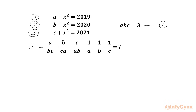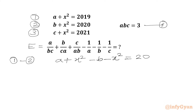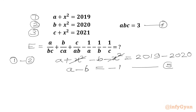Now I will perform operation 1 minus 2. So I can write: a plus x² minus b minus x² will equal 2019 minus 2020. We can cancel the x² terms, and we get a minus b equals negative 1. Let us call this equation number 5.